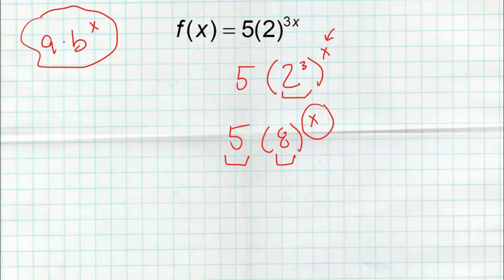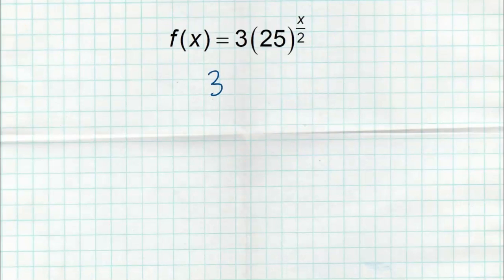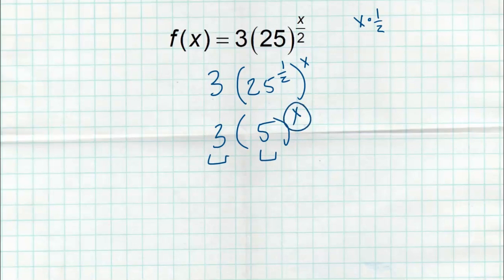Many kids do this wrong — they'll do 5 times 2 to the 3rd times 2 to the x. That is wrong — do not do that. That's how you separate addition. When you have addition in your exponent, you get two separate bases. Multiplication separates into a double power. Next example: 3 times 25 to the x divided by 2. Division is multiplication by the reciprocal, so this is really x times 1/2. I separate 25 to the 1/2, all raised to the x. And 25 to the 1/2 is the square root of 25, which is 5. So my a value is 3, my b value is 5, and the exponent is just x.